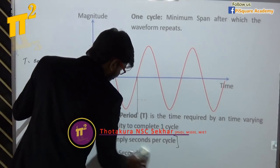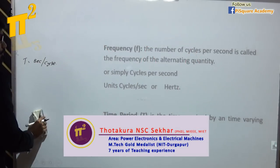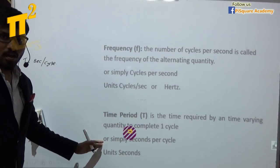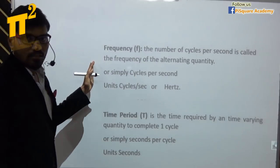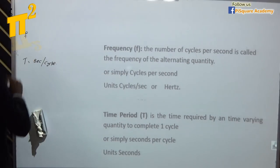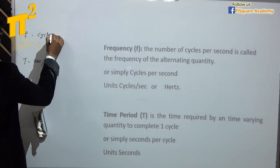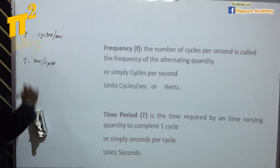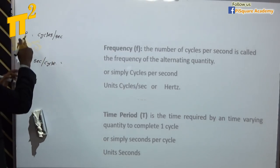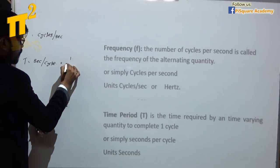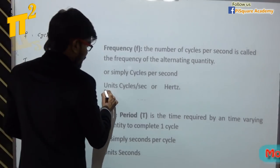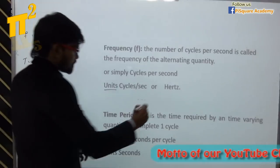So let's look at another definition called frequency. What is frequency? It is the inverse of time period. In time period, we see for one cycle how much time it is taking. In frequency, we see in one second how many cycles are coming. The relation between T and F: capital T equals 1 by F, or F equals 1 by capital T. Units are cycles per second, or hertz.